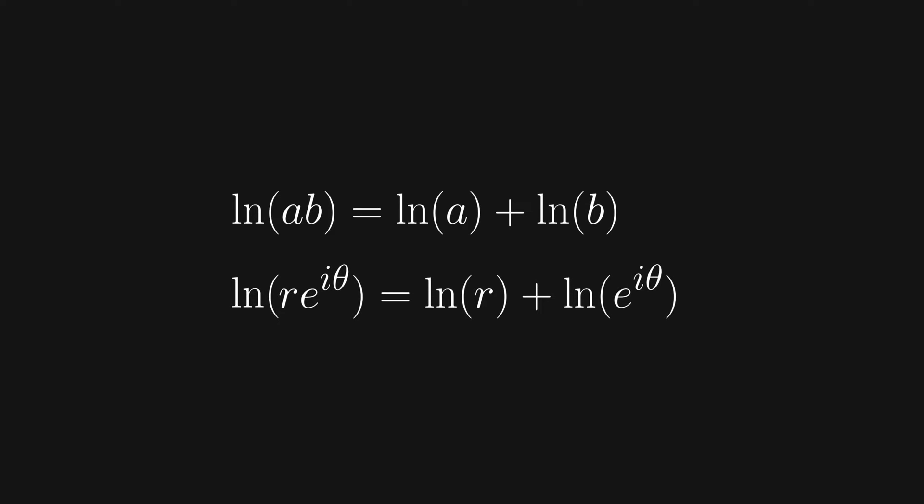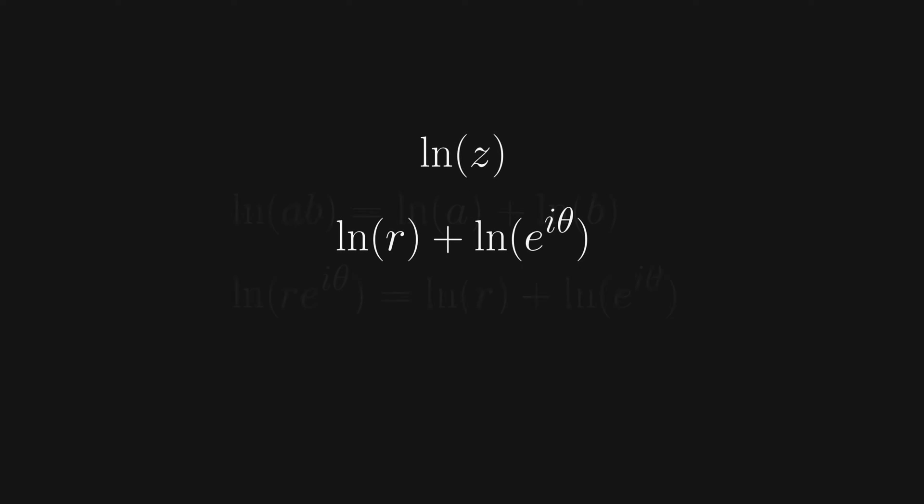So from that, we can see that natural log of r times e to the i theta must equal natural log of r plus natural log of e to the i theta. Once again, we can see that the natural log and e cancel each other out here. From that, we get natural log of r e to the i theta equals natural log of r plus i theta.